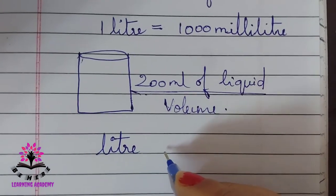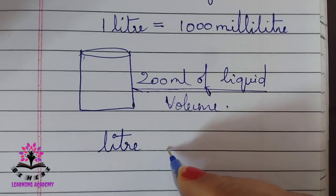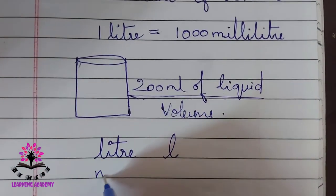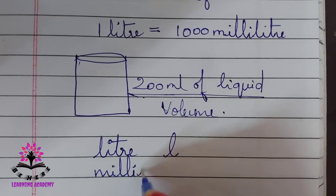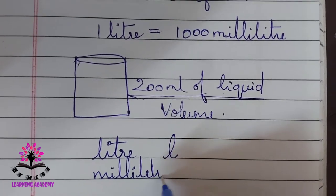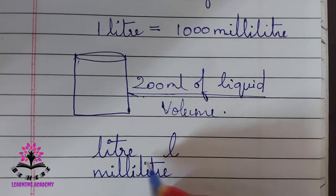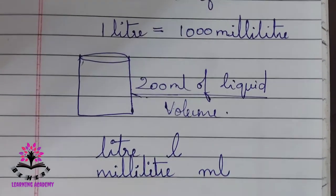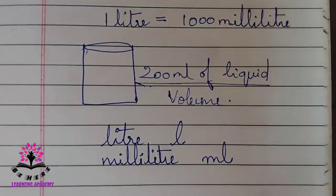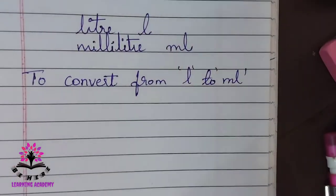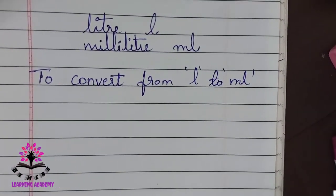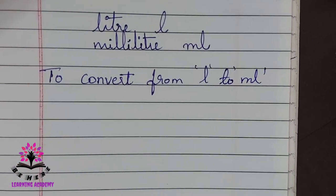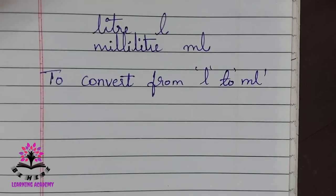Liter is denoted by the small letter 'l', and a smaller unit than liter is milliliter, denoted by 'ml'. Now let us learn to convert from liters to milliliters.